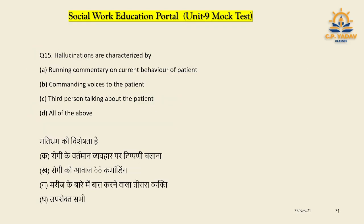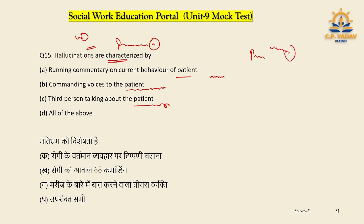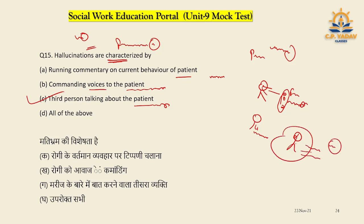Question number fifteen: Hallucination — how can you identify it? Characteristics include: a running commentary on the current behavior of the patient, a commanding voice to the patient, and a third person talking about the patient. For example, a person hears two people around them as if giving commands like 'skip class' or 'stop studying.' This is hallucination. All options are correct, so D is the right answer.